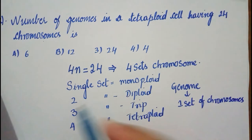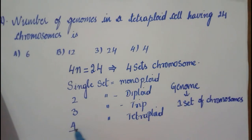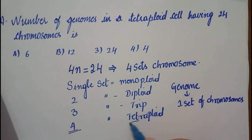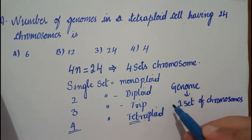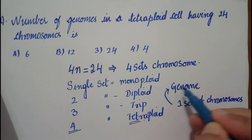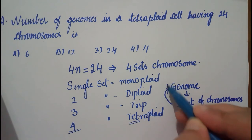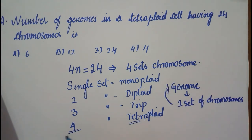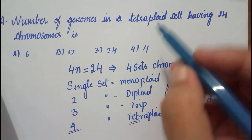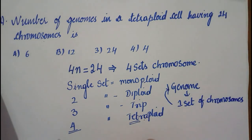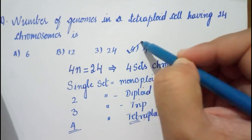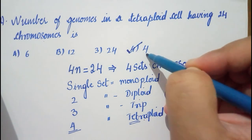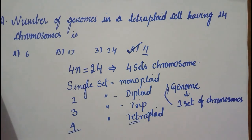In a tetraploid, there are four sets of chromosomes. One set of chromosomes equals one genome, so four sets of chromosomes means we have four genomes. Therefore, the answer is four genomes.